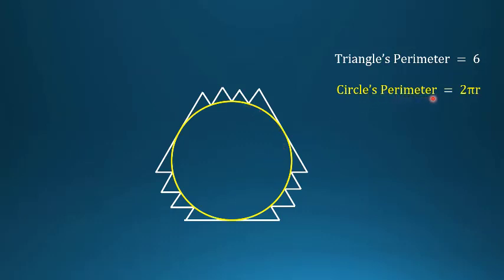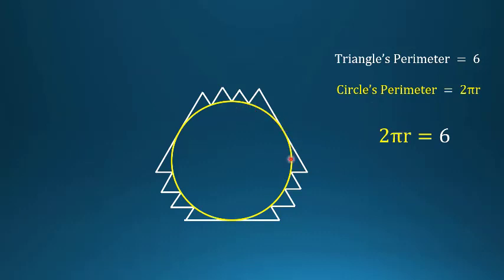The circle's perimeter is 2πr, where r is the radius of the yellow circle. Because the white figure approaches the yellow figure, we conclude the perimeter 2πr equals 6, which is the perimeter of the white shape.